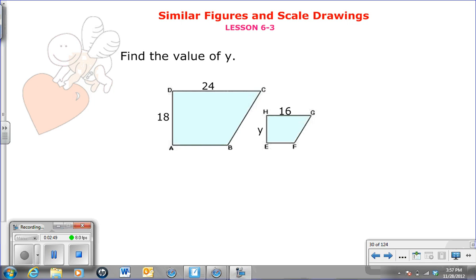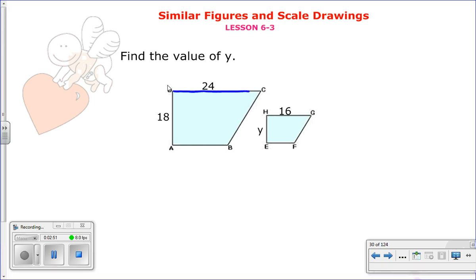Alright, let's do this one. Well, I see that line DC here is 24. And on the corresponding trapezoid, it is 16. So that's one part of my proportion or one ratio. And now I do the other side. And again, I go back to the original one that I started with. So I have 18 over Y.